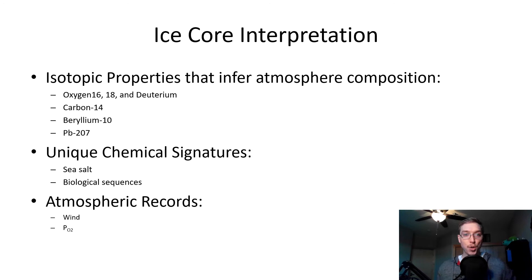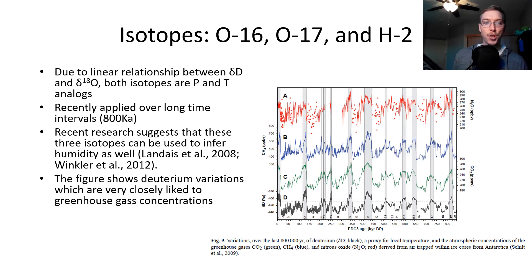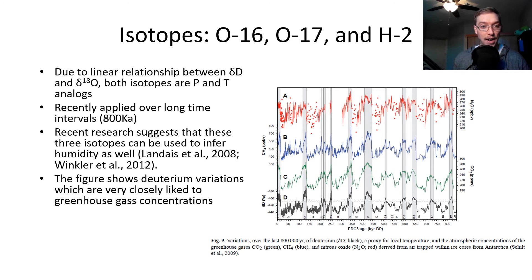For ice core interpretation, we look for isotopic properties that infer atmospheric composition: oxygen-16 and -18, deuterium, carbon-14, beryllium-10, and lead-207. We also look for unique chemical signatures like sea salt and biological sequences, and atmospheric records like wind and partial oxygen pressure. Due to the linear relationship between isotopic deuterium and oxygen-18, both isotopes are precipitation and temperature analogs. Applied over long time intervals, we can extend the record back to 800,000 years before the present. Recent research suggests these isotopes can also be used to infer humidity.